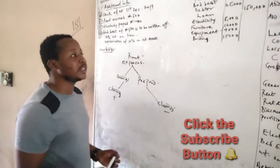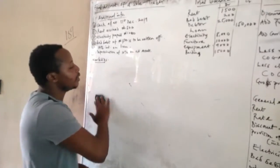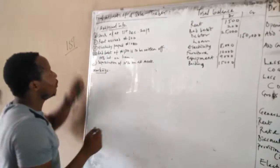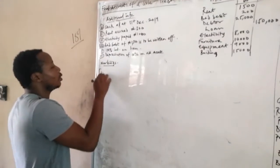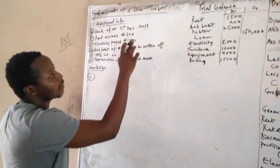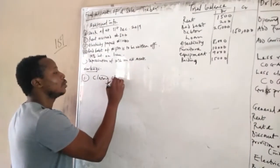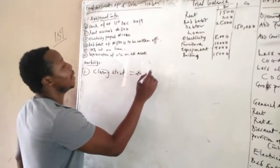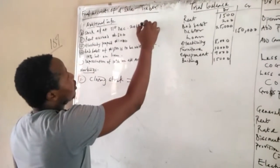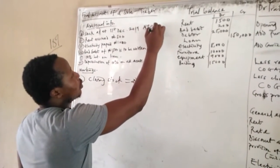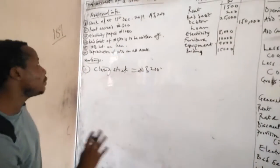Now let's go to our additional information and start the workings properly. The first working is stock as at 31st December 2019 — just write it as closing stock. The closing stock amount is 3,200, so you have 3,200. That's the first thing.